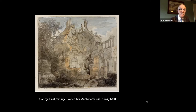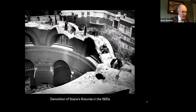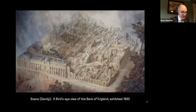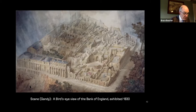Gothic ruins, Kames argued, demonstrated the triumph of time over strength — a melancholy but not unpleasant thought. While classical ruins suggested the triumph of barbarity over taste — a gloomy and discouraging thought. And here I'm showing Soane's nightmare come true: this was the demolition of the very rotunda in the 1920s, when Soane's interiors were razed so that a ten-story building could be erected within the walls, which still survive and define the perimeter of the Bank of England. In a sense, the triumph of barbarism over taste did happen.